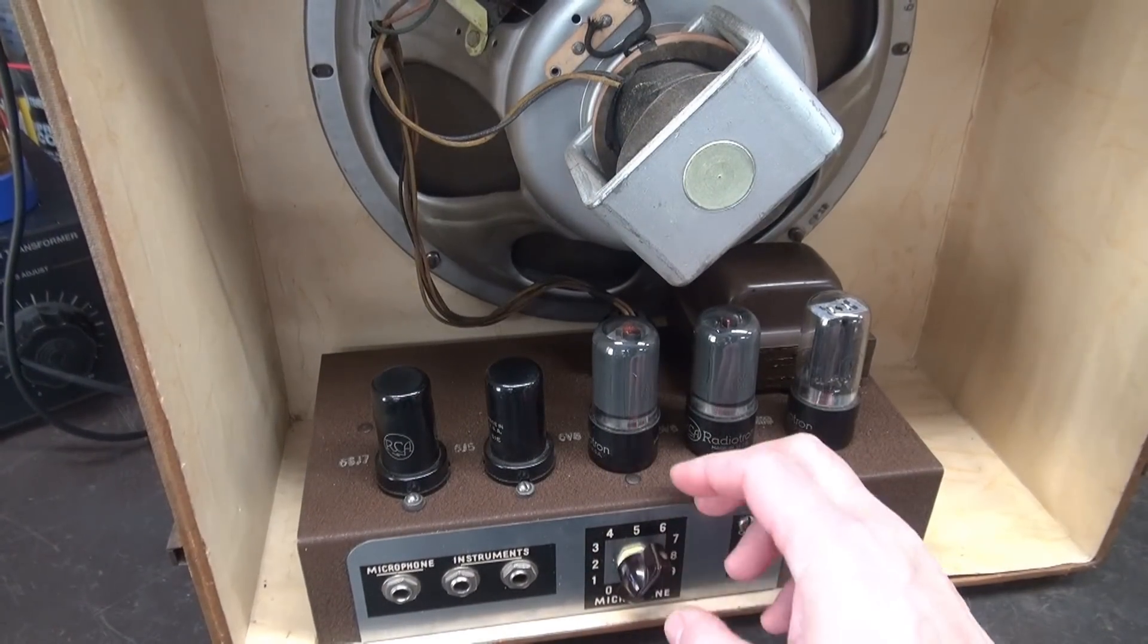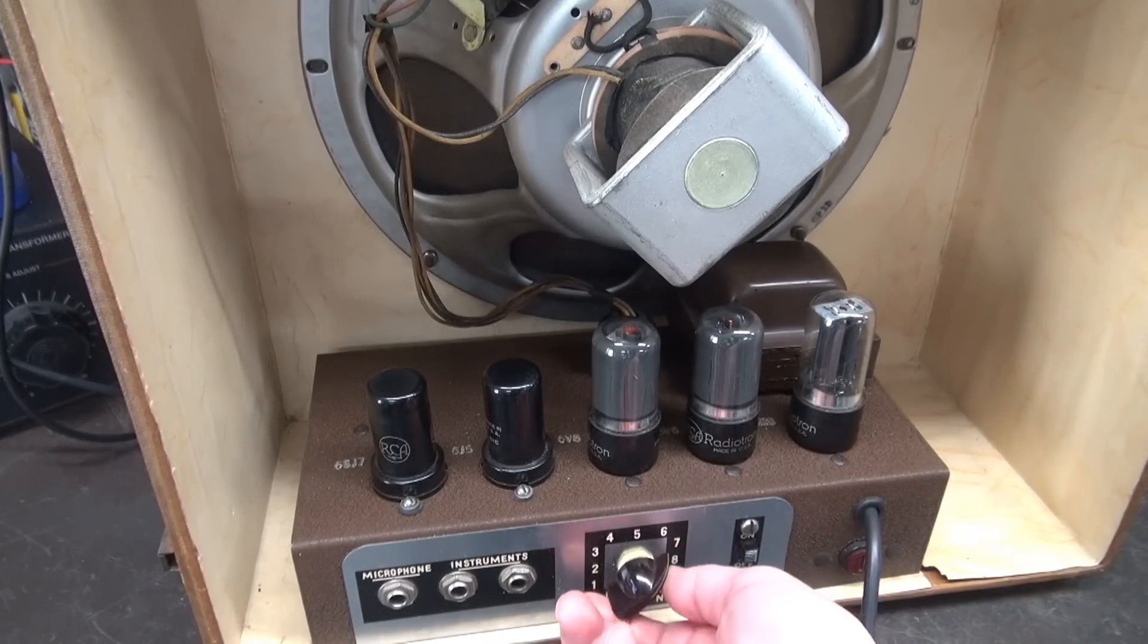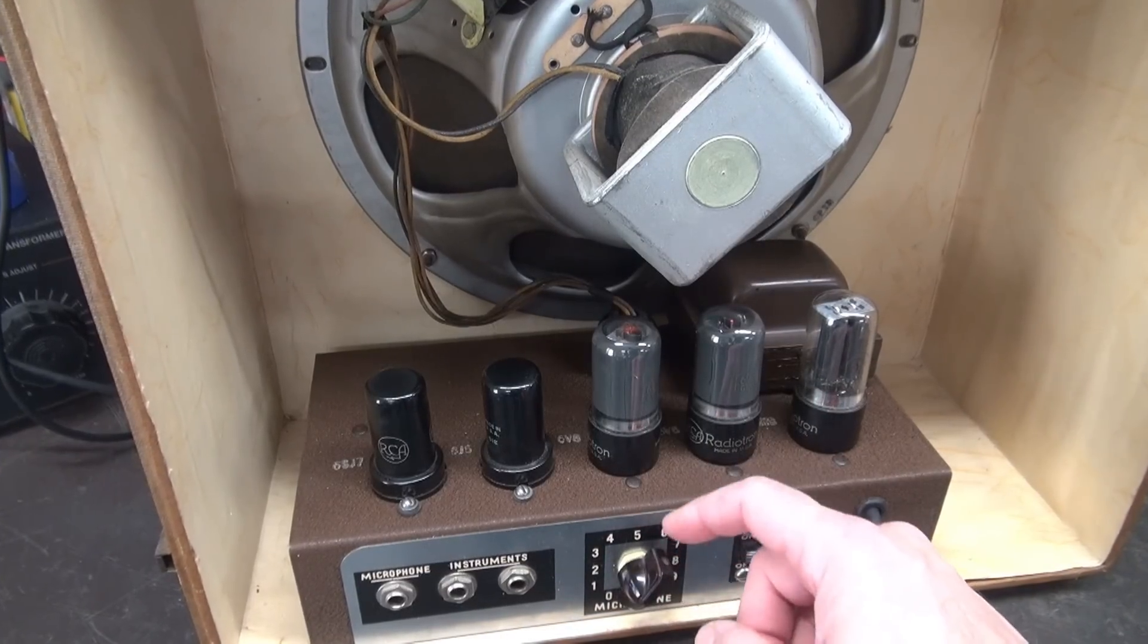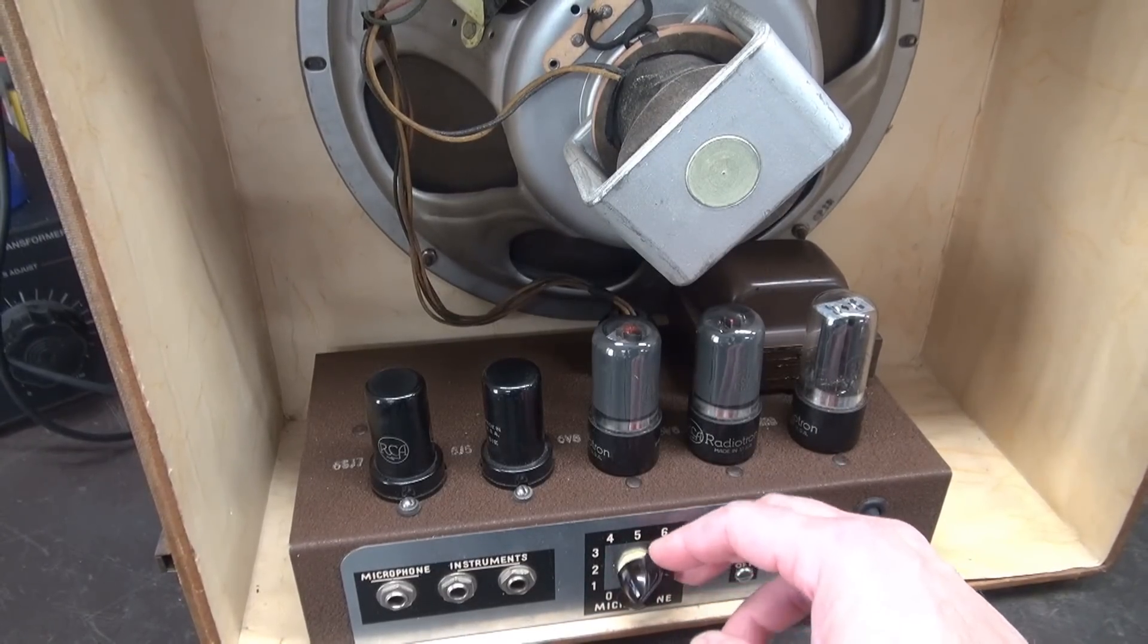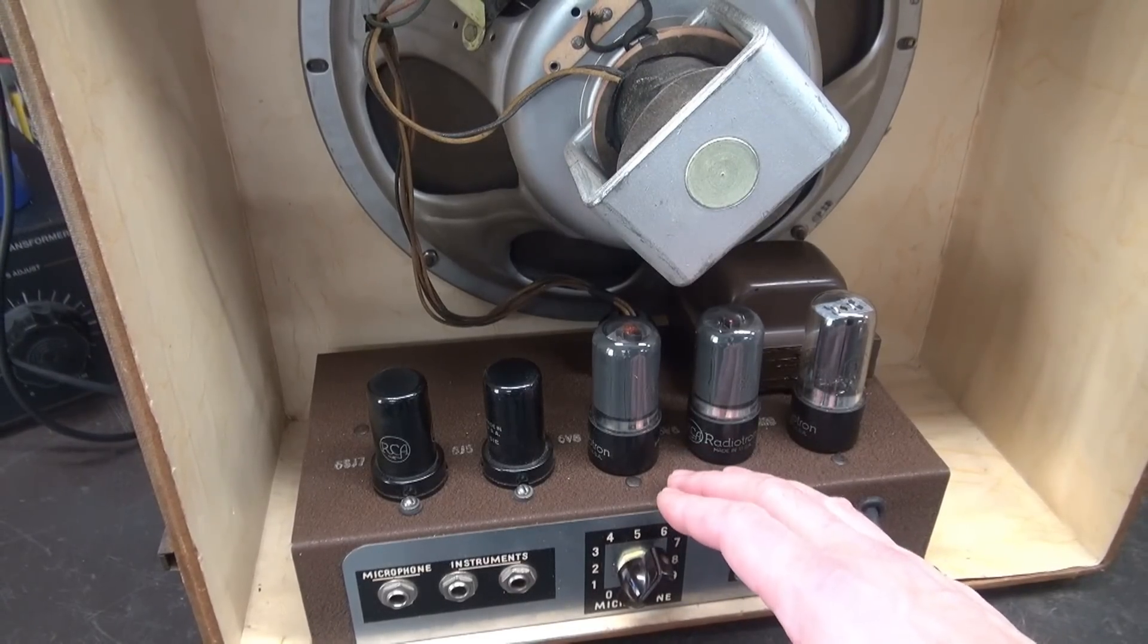All right, so listen as I adjust the volume pot. You can see it does not change the noise level at all. So you would assume that the volume pot itself is defective, but that's not the case. It's just wired in the wrong location on this amplifier.